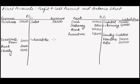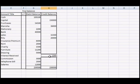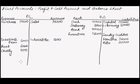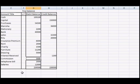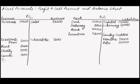The amount for interest received is $1,200. Commission paid is $3,000. Telephone bill is $2,000 — writing the short form. Next we come to salaries, which is $12,000.